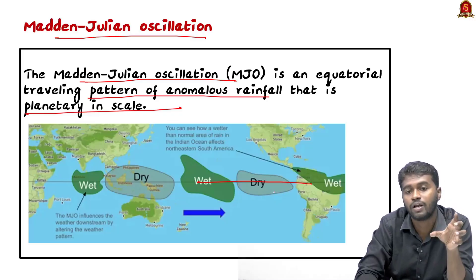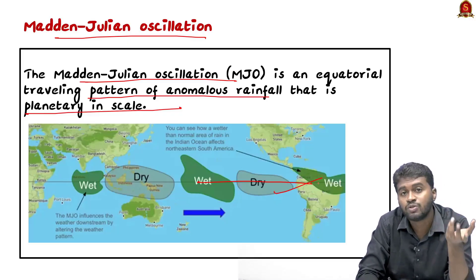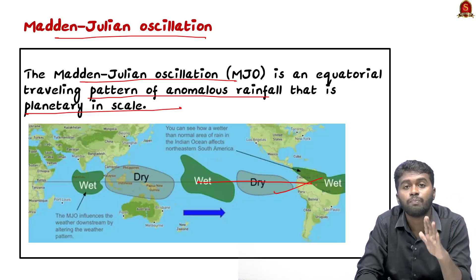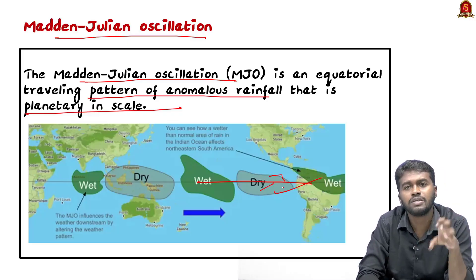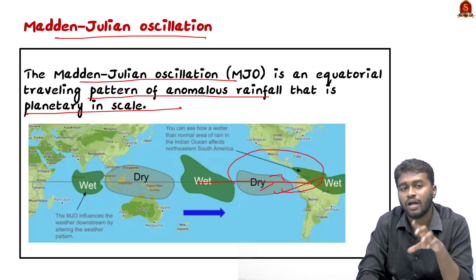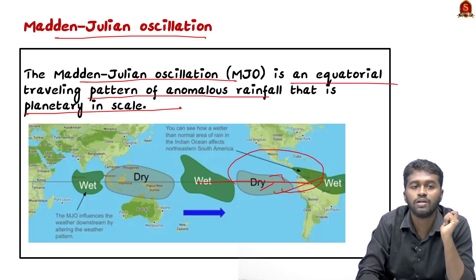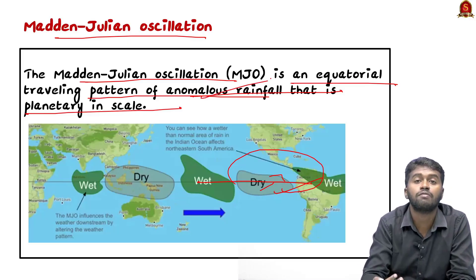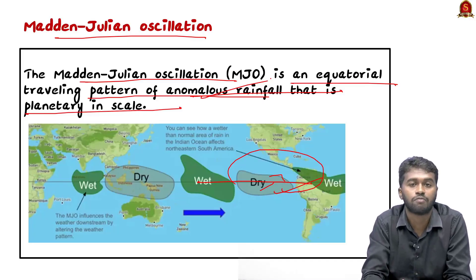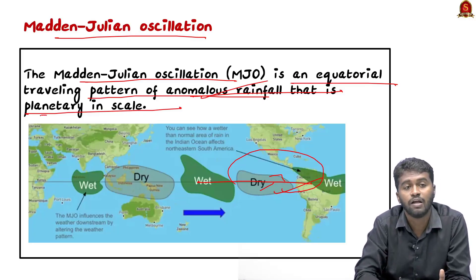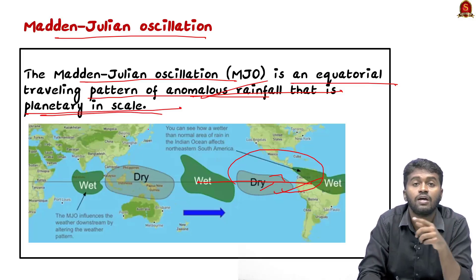The strong impact of this Madden-Julian Oscillation is on the tropical area. This phenomenon can either enhance or suppress rainfall in the tropics. The subtropical area will also have a limited impact. It travels around the world along the equator. Coming back to the PIB definition — it is an equatorial traveling pattern of anomalous rainfall, meaning it can make rainfall erratic, that is, unpredictable — either suppressing or enhancing it.